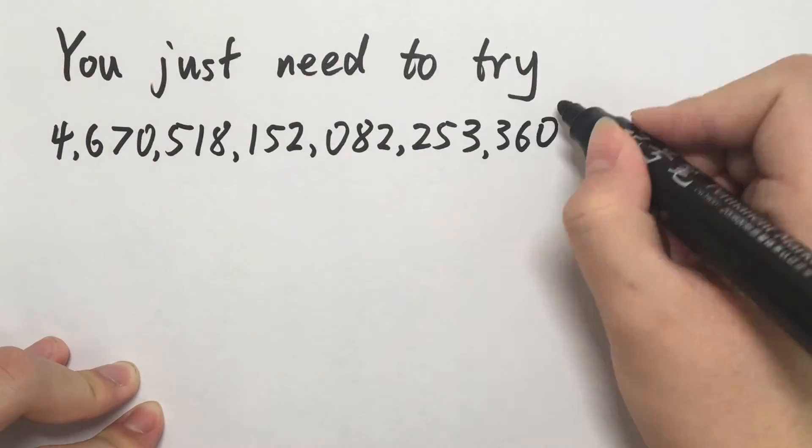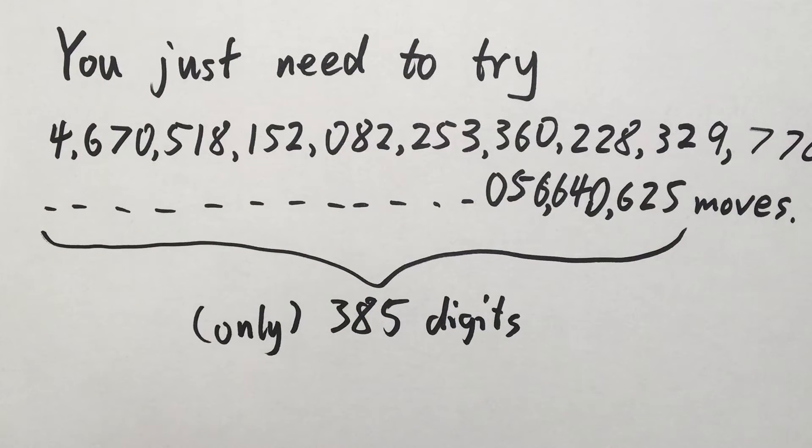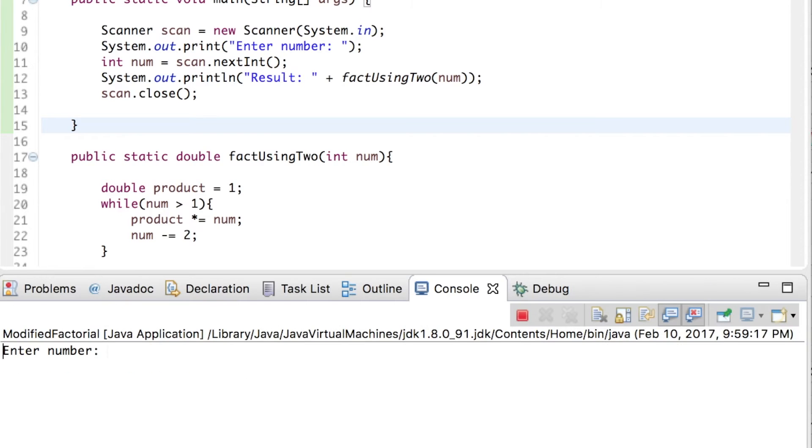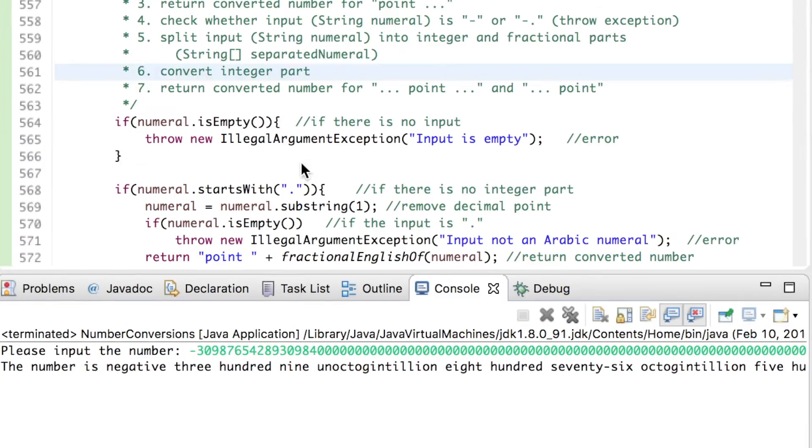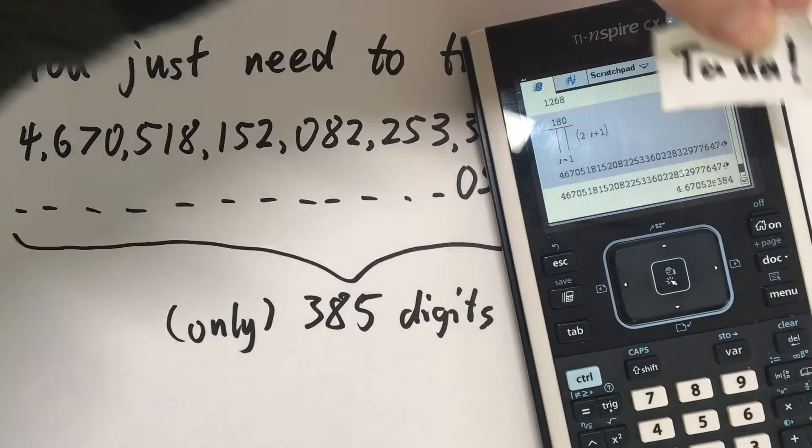So in all, there are about 4.67 times 10 to the 384th power possible strategies. Which is so large, my Java program thinks it's infinity. Lucky this calculator can handle large numbers.